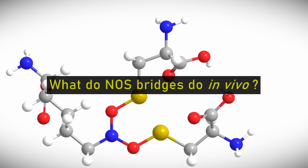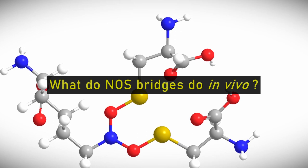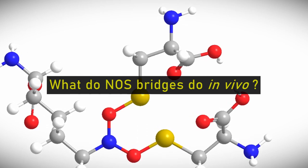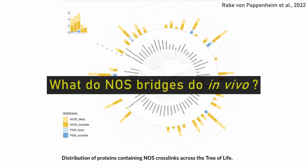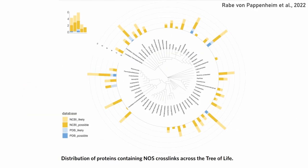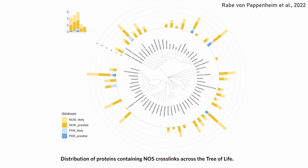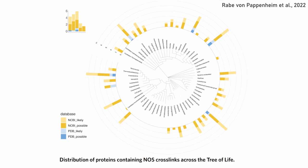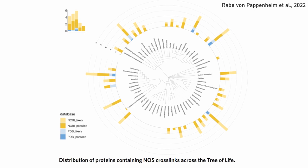Do they just form in oxidizing conditions and are maybe a part of the many damages reactive oxygen species do to a cell, or are they deliberately used as a regulation mechanism? What supports this assumption are the multiple examples of enzymes where the amino acids forming the bridge directly participate in catalysis as well.